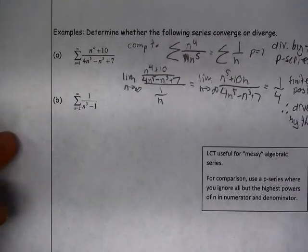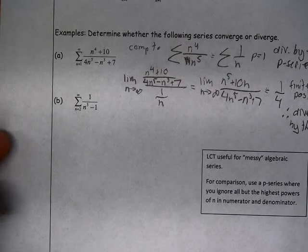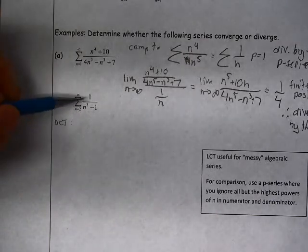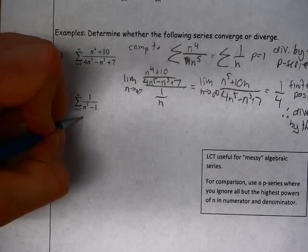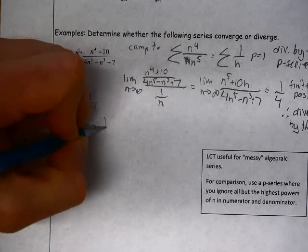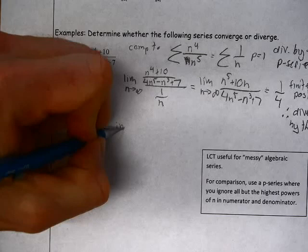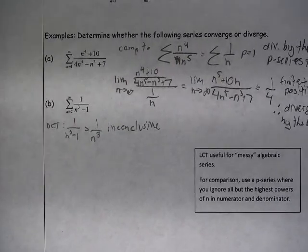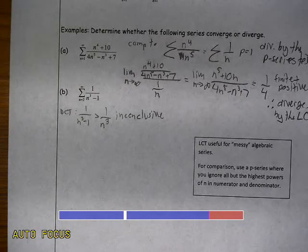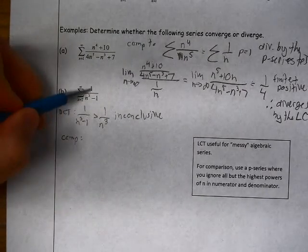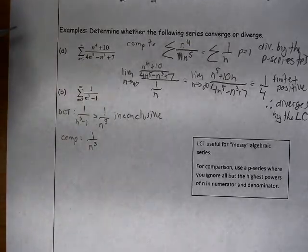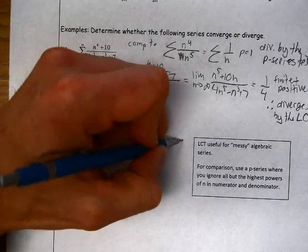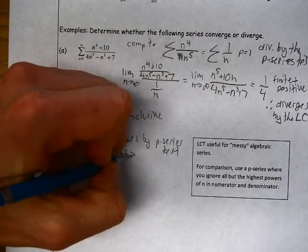Let's look at the next example: 1 over (n cubed minus 1). The first thing to notice is that if we tried to use the direct comparison test here, we know that 1 over n cubed converges, but 1 over (n cubed minus 1) is greater than 1 over n cubed. So the direct comparison test is inconclusive, which is why we're going to use the limit comparison test here. We'll compare 1 over (n cubed minus 1) to 1 over n cubed, which converges by the p-series test since p equals 3, which is greater than 1.